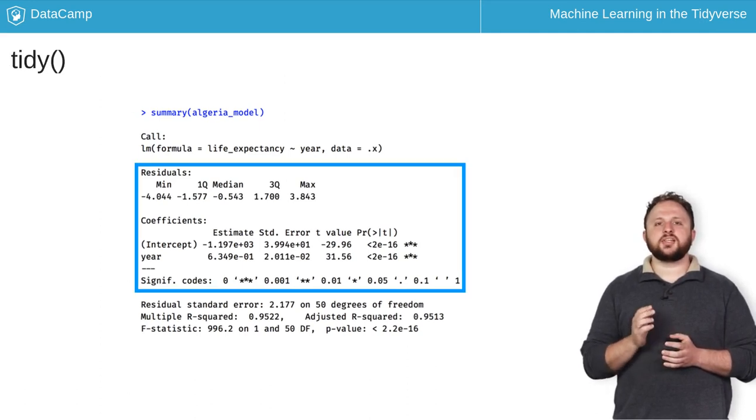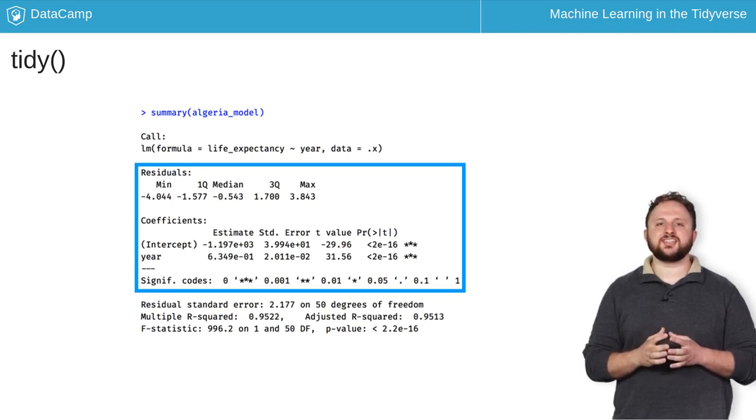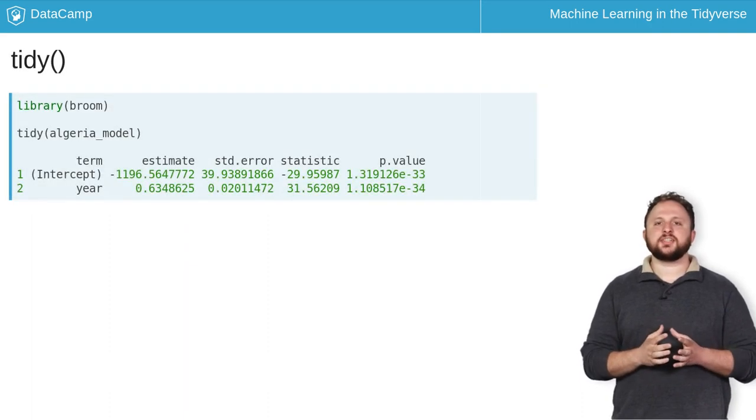The tidy function collects the statistical findings of a model into a data frame. When used with a linear model, tidy returns the coefficients and their corresponding statistics for that model. To extract these statistics, you simply apply the tidy function to the model object as shown here.